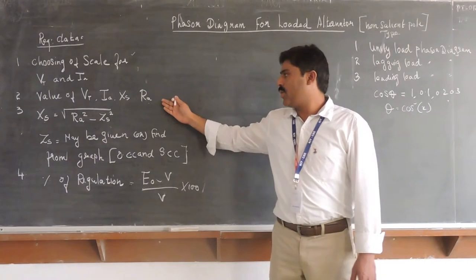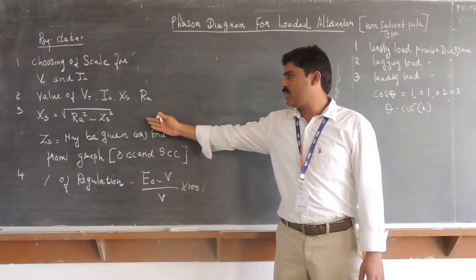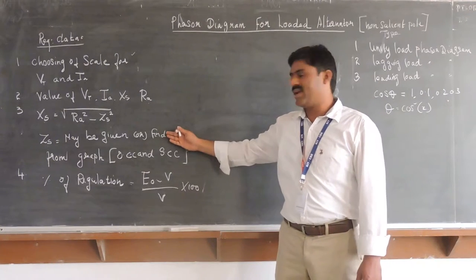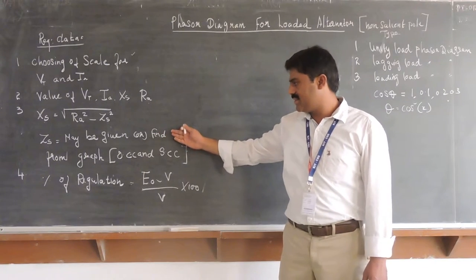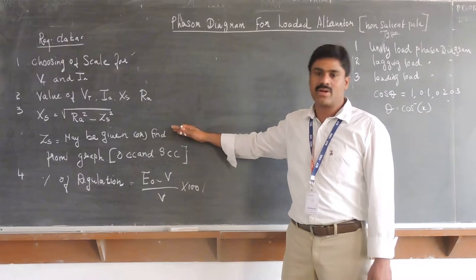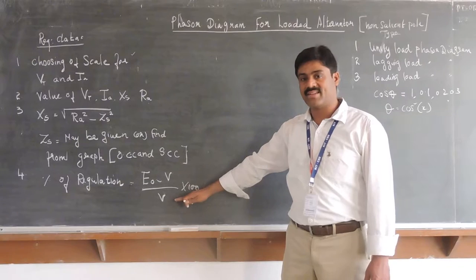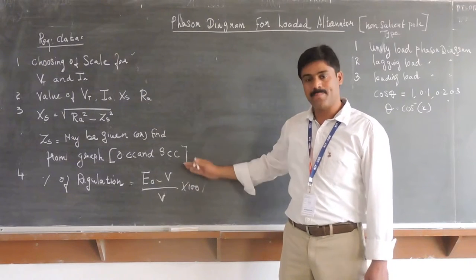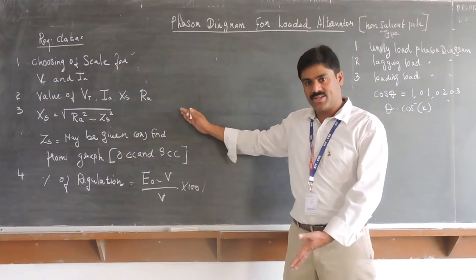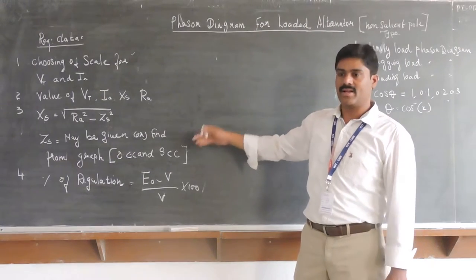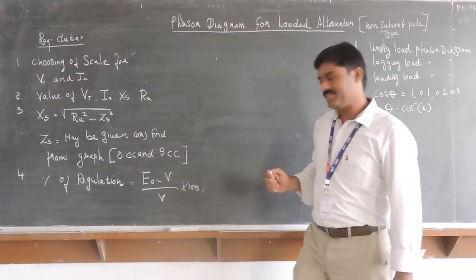How to choose a scale, how to fix the parameters, how to calculate the value of Zs. Either it may be given or it may be taken from the graph, how to find the value of regulation. These are the same required steps for calculating E0 even in previous power factor cases.